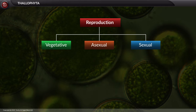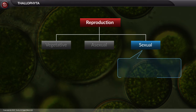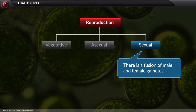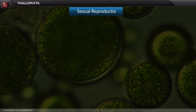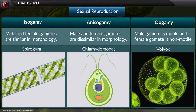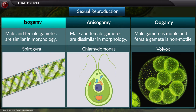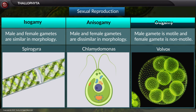Sexual reproduction involves a fusion of male and female gametes. Based on the type of gametes and their fusion, sexual reproduction is of three types: isogamy, anisogamy, and oogamy.